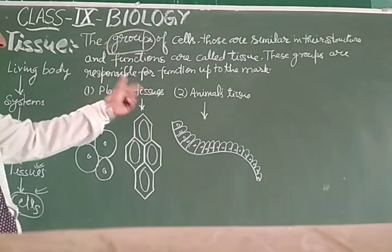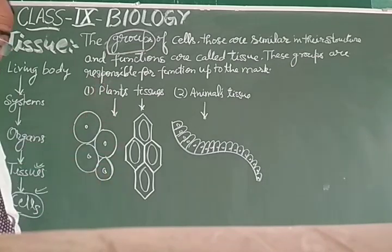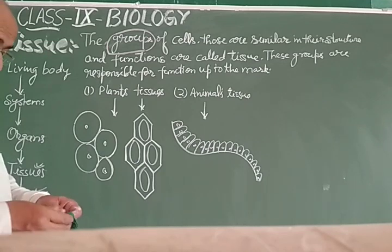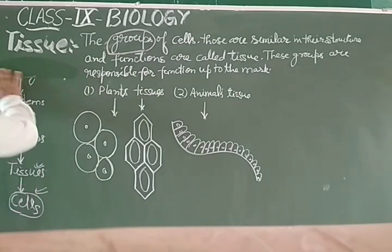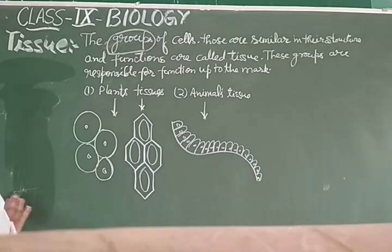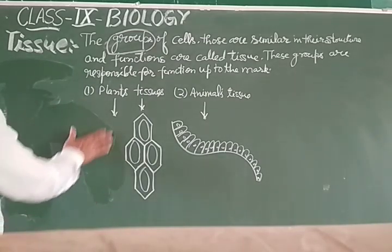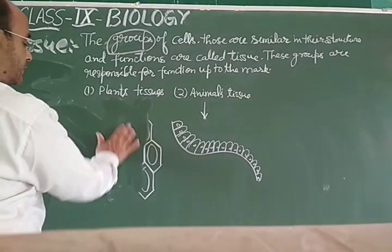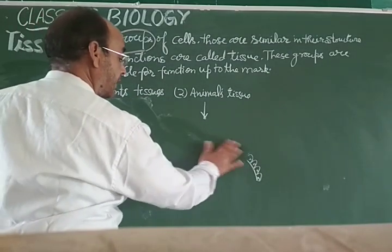Tissue has been divided into two groups: plant tissue and animal tissue. Now you will study about plant tissue first. Plant tissue is categorized into several categories, and we will discuss those categories here.